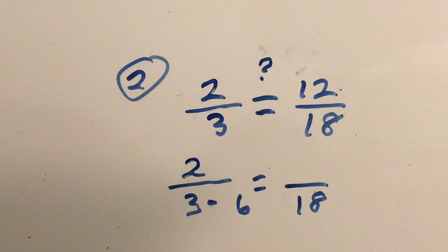Well, 3 times 6 gives me 18, so remember now that whatever I do to the bottom, I have to do to the top. So let's find out if 2 times 6 is 12. It sure is.